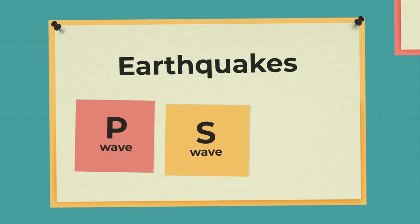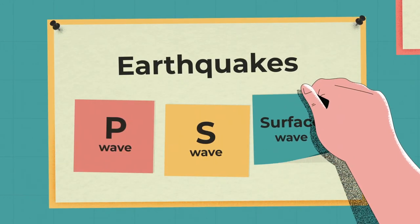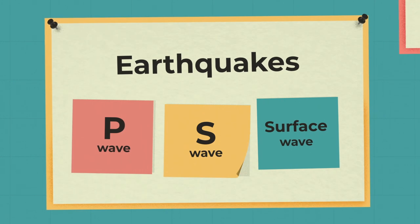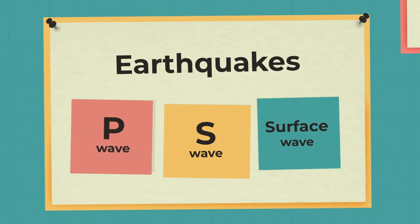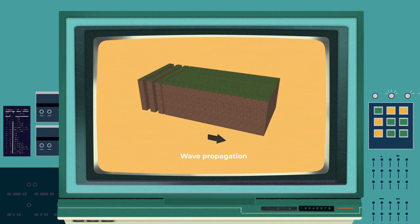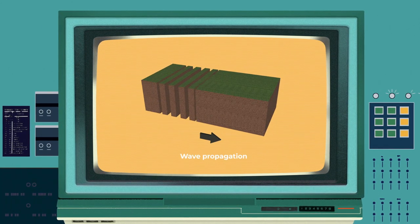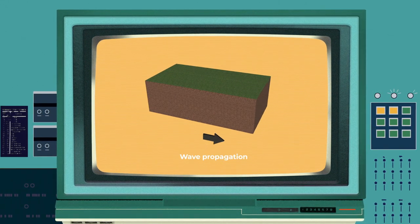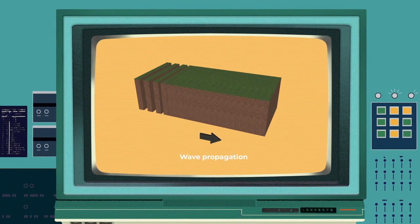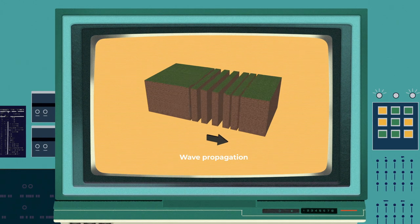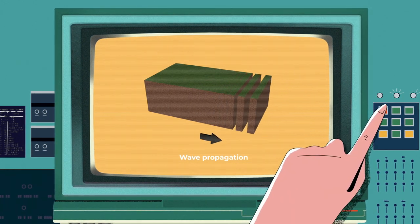Earthquakes create three different types of waves: P, S, and surface waves. The P waves, or primary waves, are compression waves, also known as push-pull waves. They travel the fastest and are the first waves to be detected.